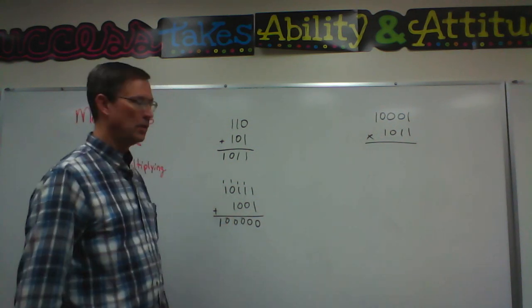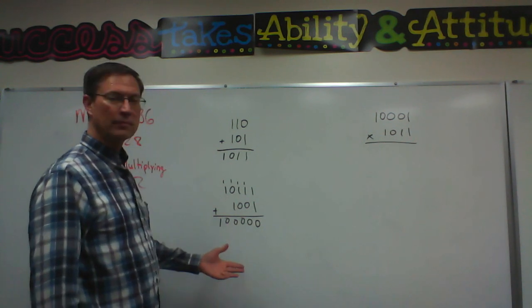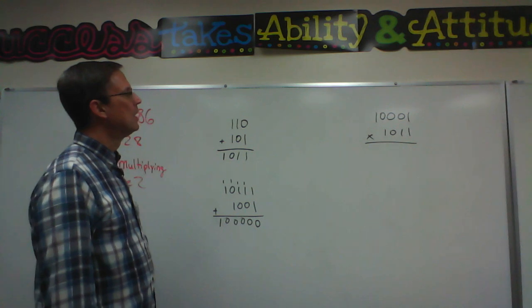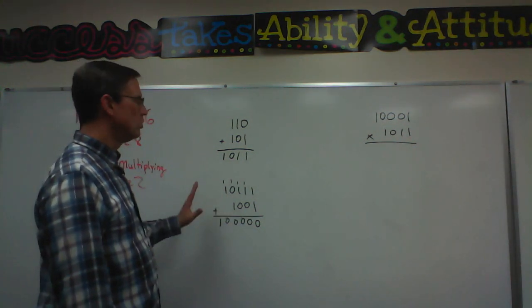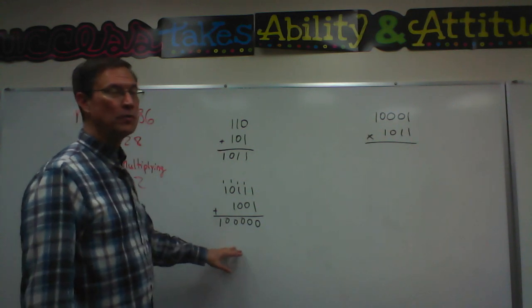1, and again we get 0 and bring the 1 over to this column. It's not hard, but again it's different, it's very different. Try to do that page, score that. Don't try to do the multiplication page until you've done the addition page correct and can move on.